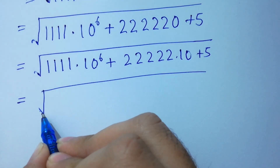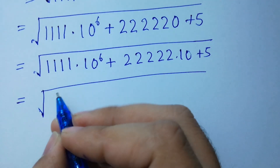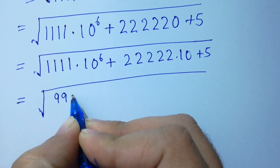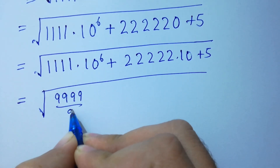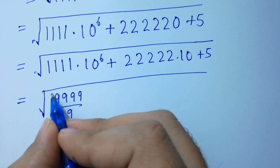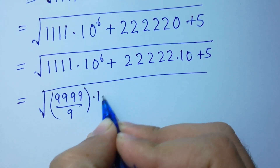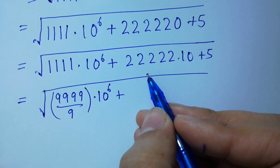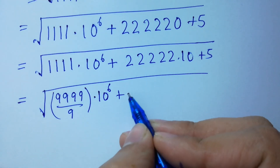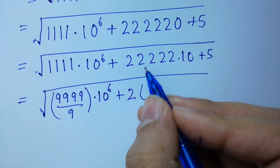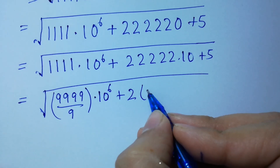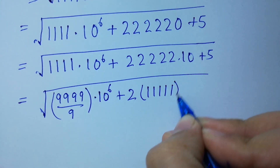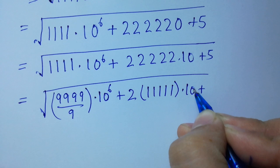Four times one is the same as four times nine, one two three four, over nine, times ten to the power six as it is, plus here five times two — two will be common — and we have five times one, two three four five, times ten plus five.